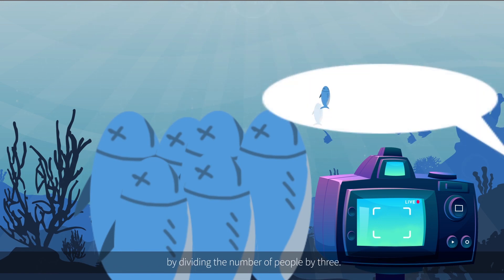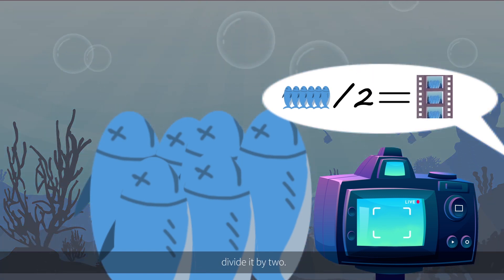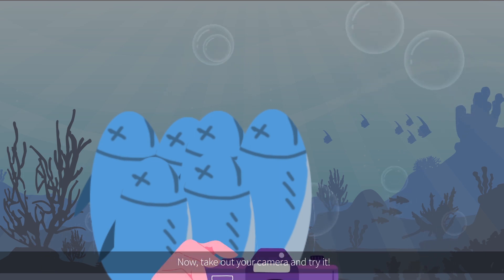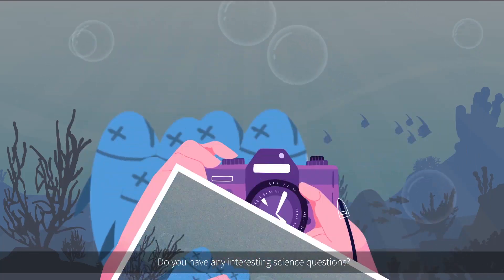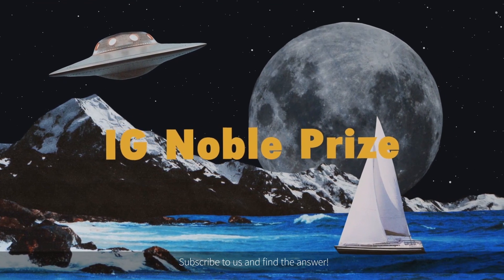If the photo is taken in bad lighting, divide it by two. Now take out your camera and try it. Do you have any interesting science questions? Subscribe to us and find the answer.